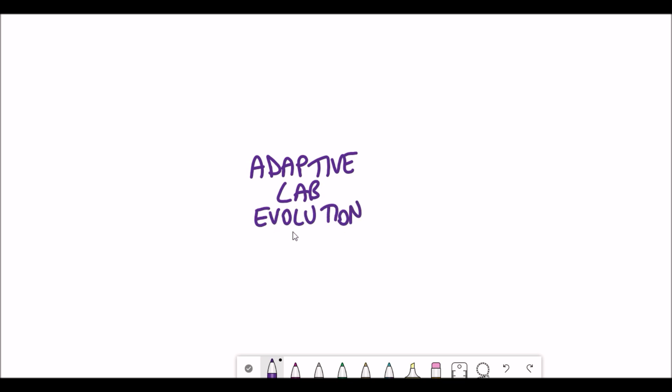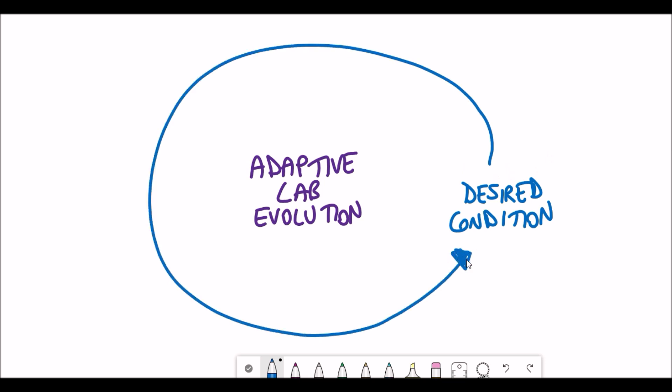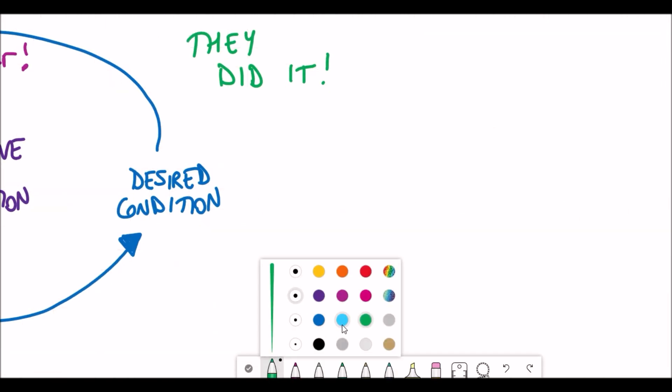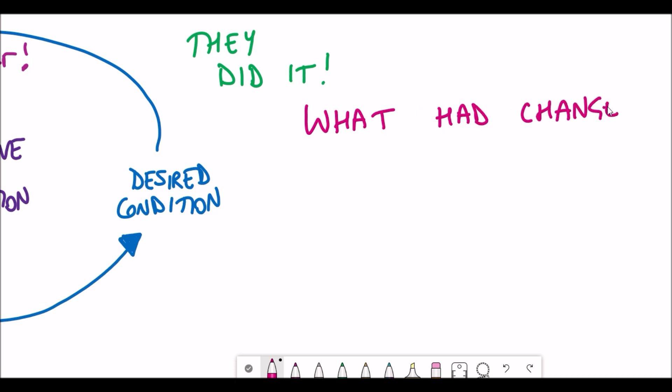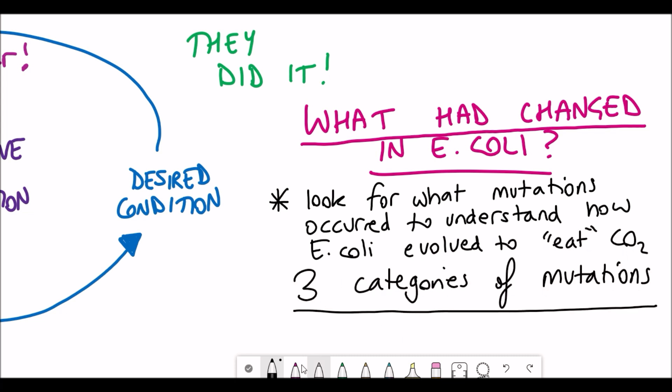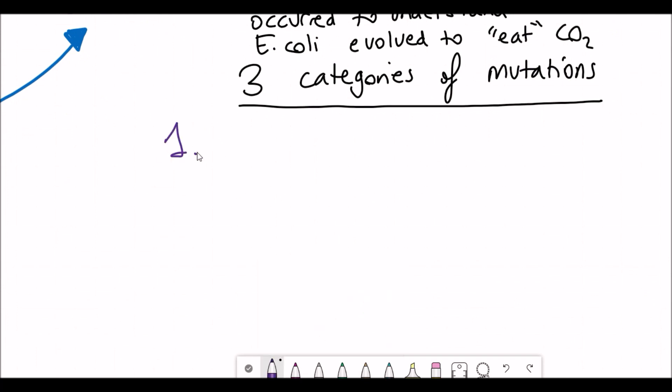Adaptive laboratory evolution pretty much does what it says. You have your bacterium and you grow them in the desired conditions that you're looking for. This enables the E. coli with the desired traits to grow faster or they're more likely to survive. You just repeat this process and you're going to enhance the proportion of bacterium that have the traits that you're looking for. And then you can see at the end of it, and they did this for one year, what has changed in the E. coli. By finding the mutations, you can try to understand how the E. coli evolved, in this case, to be able to eat carbon dioxide.